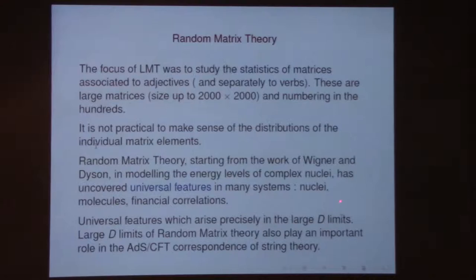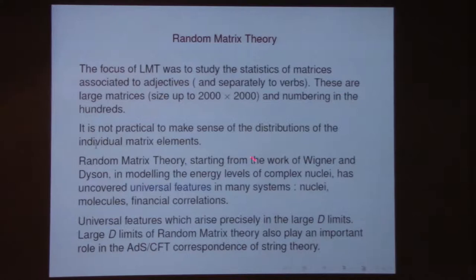Energy levels of complex nuclei have to do with matrices because of the Hamiltonian. Solving different Hamiltonians gives you different spectra, and you want to know something about the statistics of energy levels of a complex nucleus that you can't directly solve. Energy level repulsion is one of the features observed in data, and what these guys found is that this energy level repulsion was a characteristic of very simple Gaussian matrix forms. These features have been found in nuclei, molecules, and other applications including financial correlation matrices.